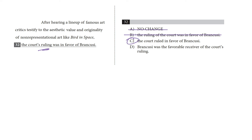Let's check out choice D nonetheless: 'Brancusi was the favorable receiver of the court's ruling.' This one's wordy and a bit awkward, and it also changes the meaning of the sentence. It was the favorable ruling that this whole passage is about, and this choice suggests that Brancusi himself is favorable, which doesn't make sense — so cross it out.